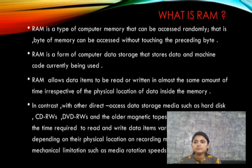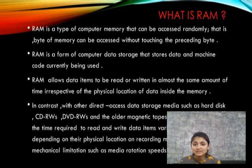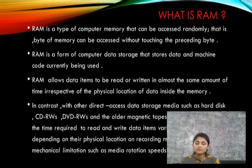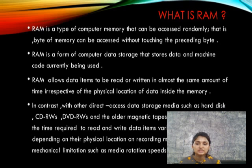What is RAM? RAM is a type of computer memory that can be accessed randomly — that is, a byte of memory can be accessed without touching the preceding byte. RAM is a form of computer data storage that stores data and machine codes currently being used on your computer. RAM allows items to be read or written in almost the same amount of time, irrespective of the physical location of data inside the memory.